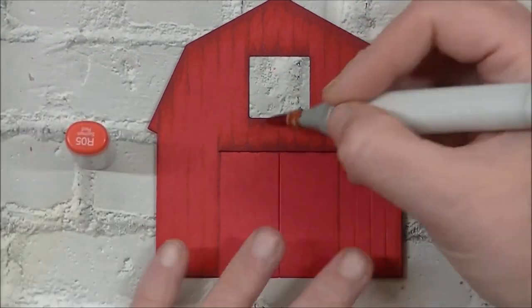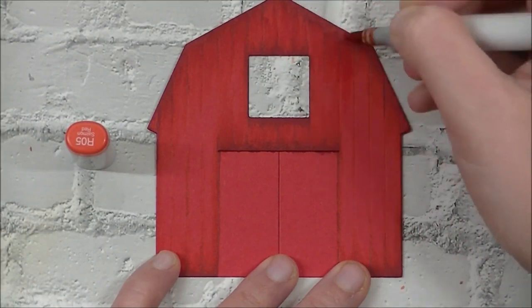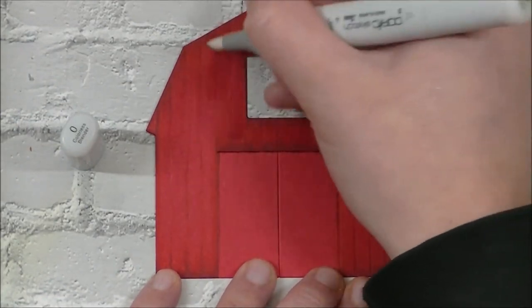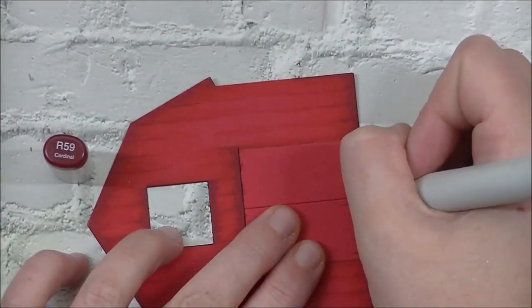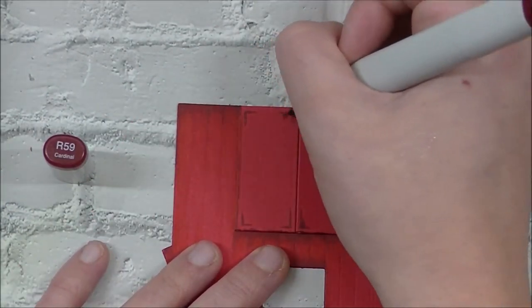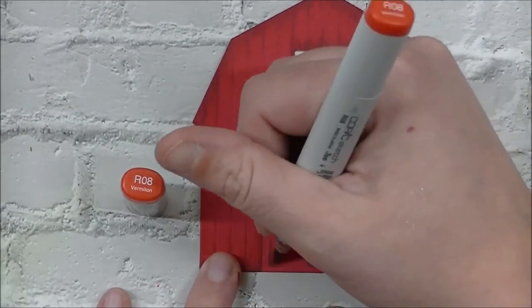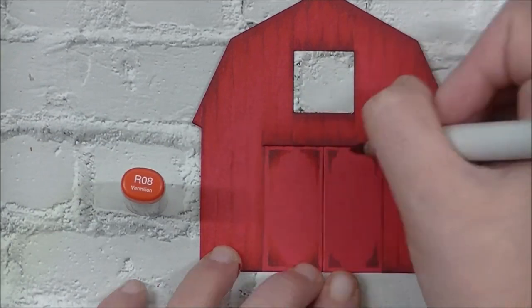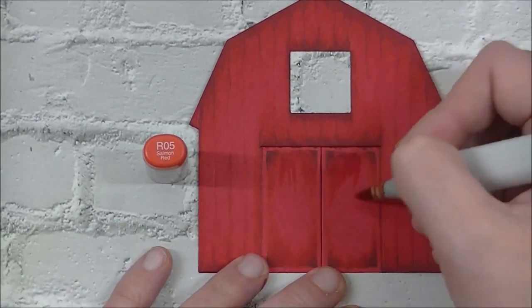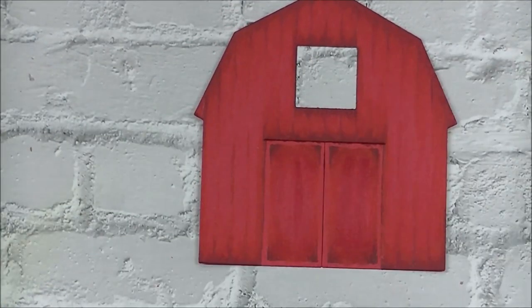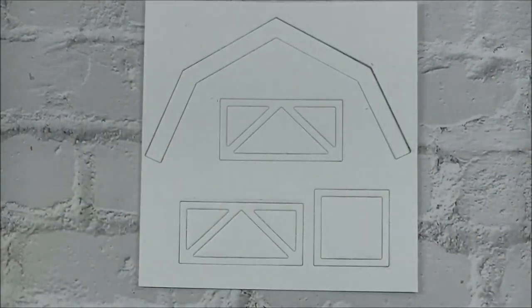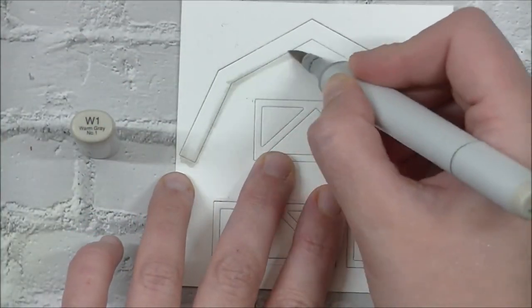Once we get this all colored up, we will move on to the white pieces for this die. I do add a little bit of red detail to the barn doors that I forgot about. Also that blank square up at the top, I decided to use the R89 and completely color the rest in with the R08 to give it a more shadowed look. I didn't like seeing the sky poke through the hole.